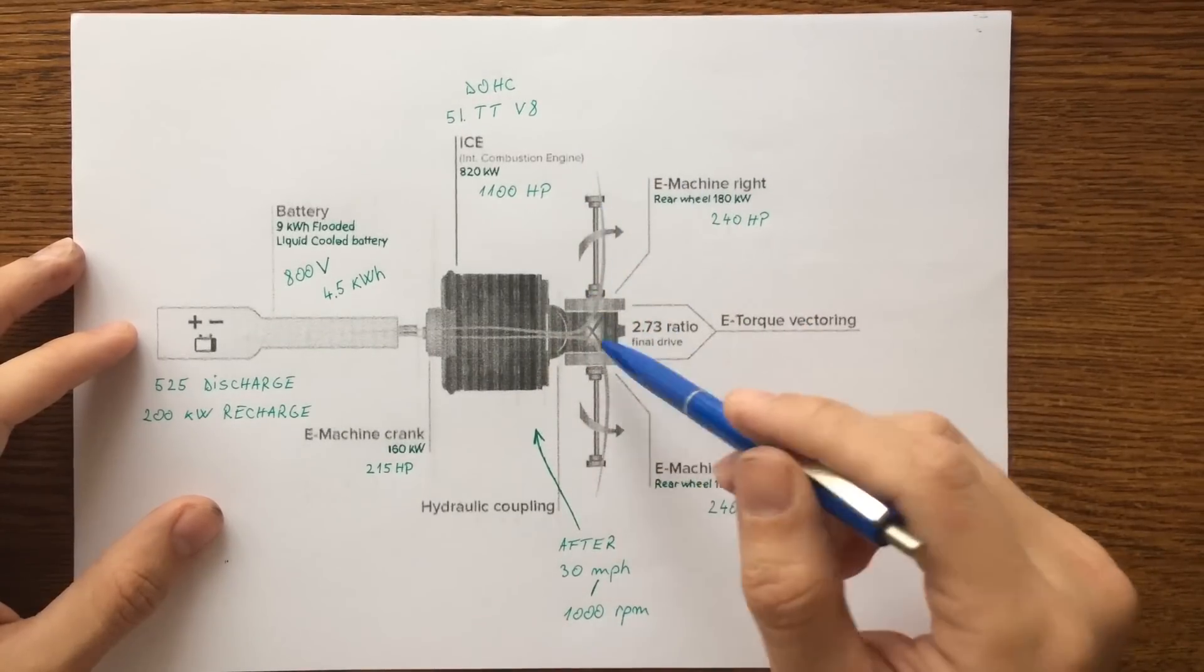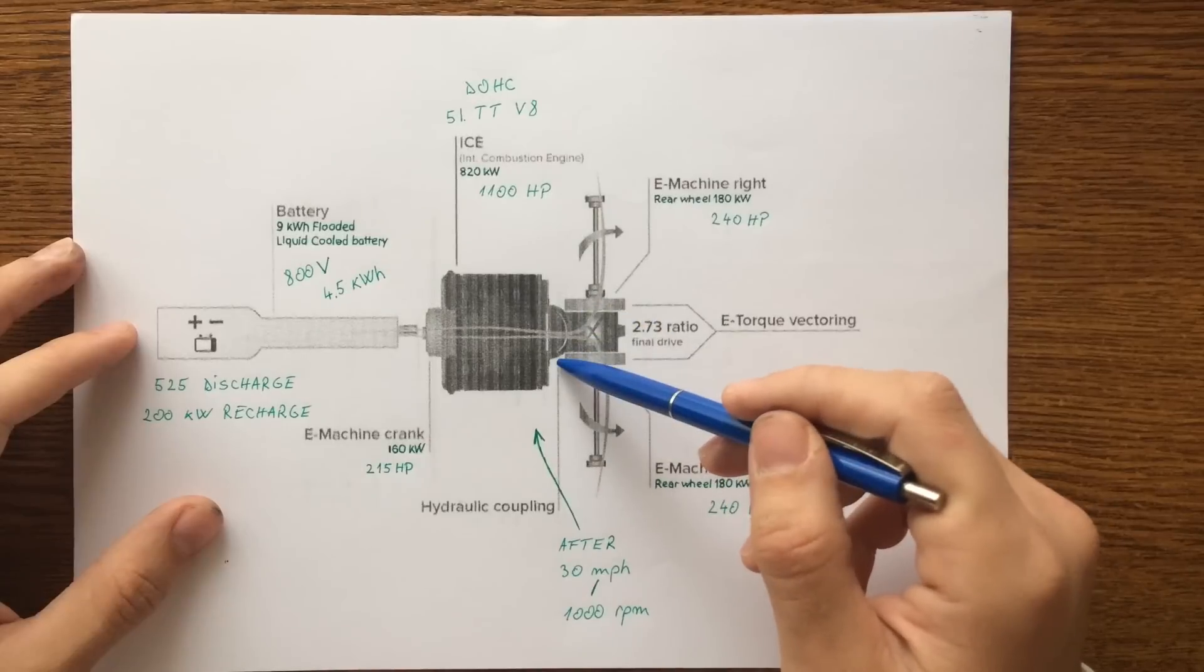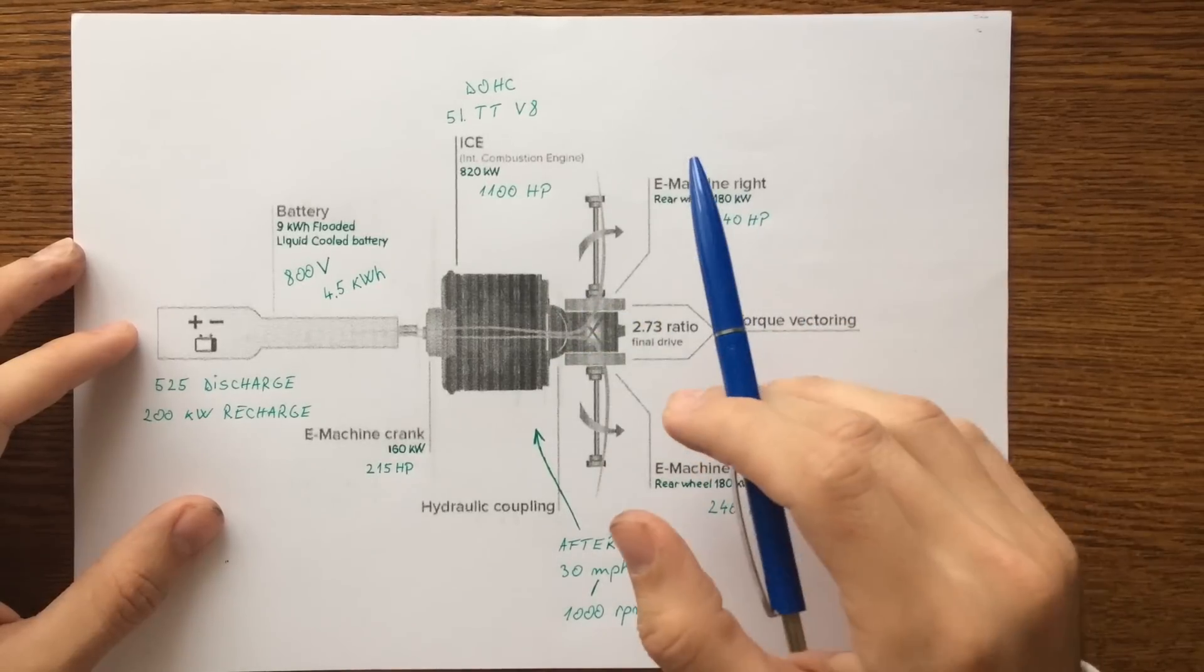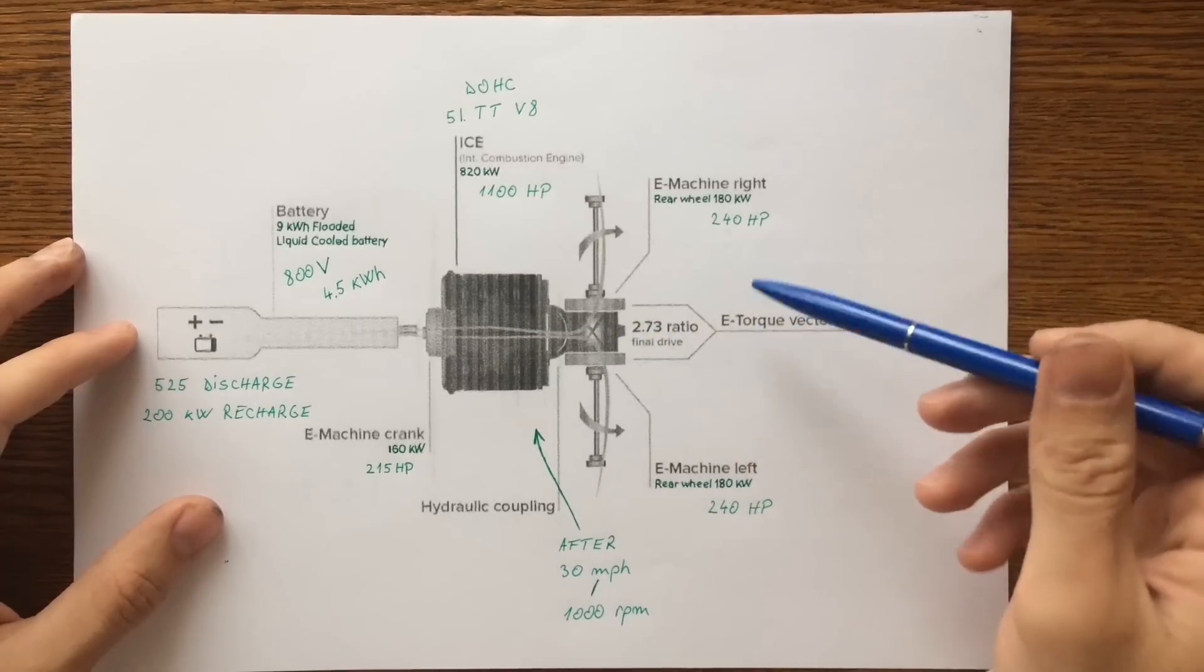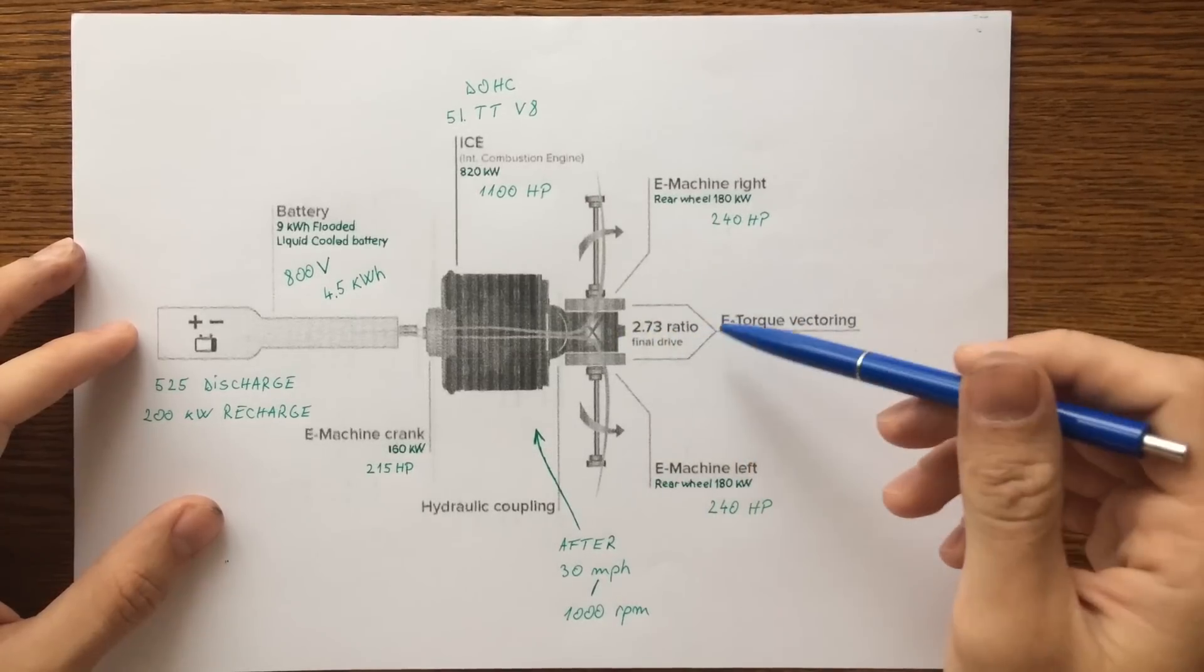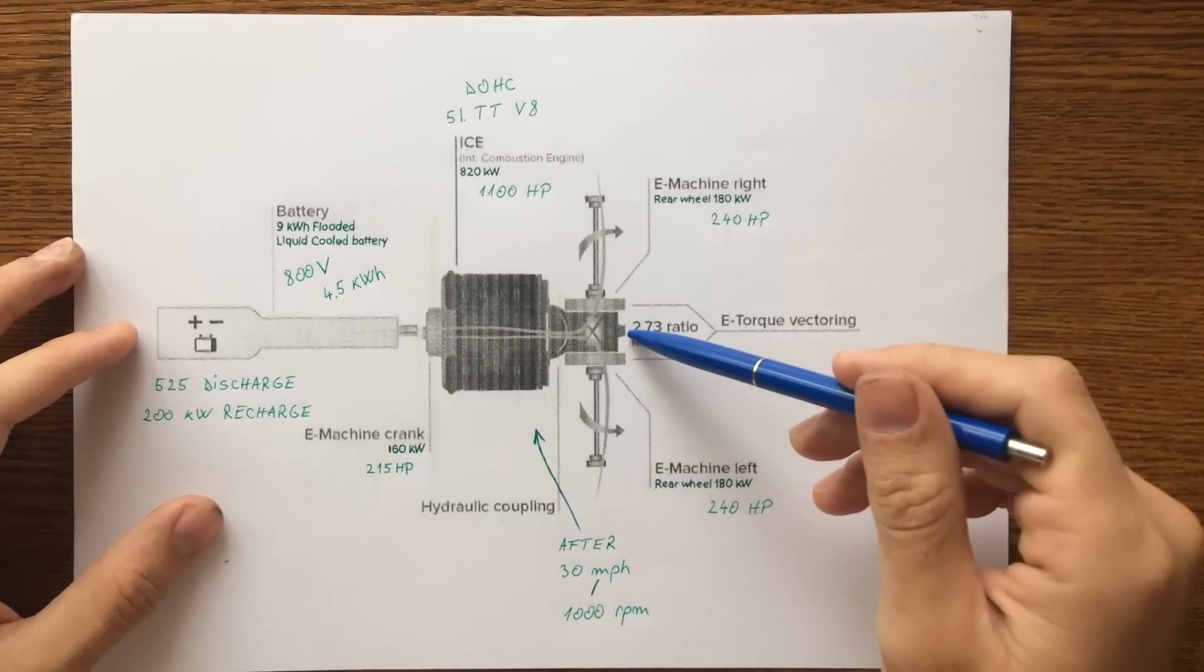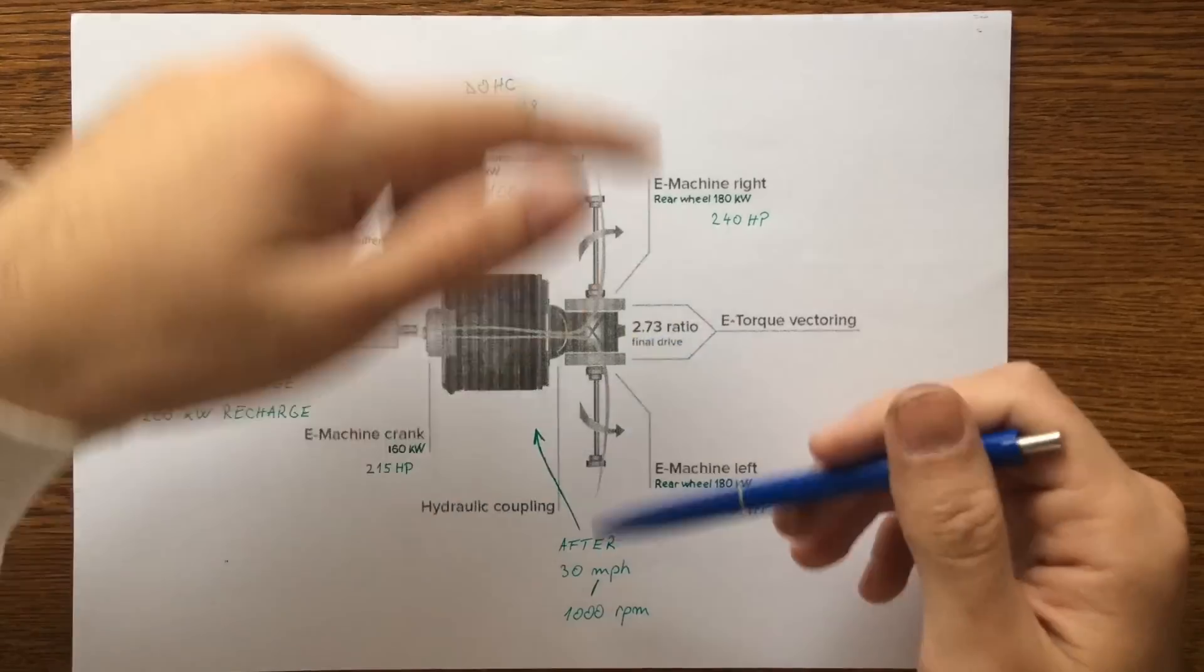The power from the engine is sent through a hydraulic coupling which acts like a clutch to a rear differential with the 2.73 ratio final drive differential, and then the power gets to the rear wheels.